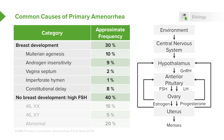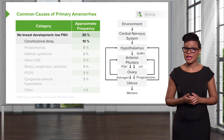If a patient has no breast development, they will likely have a high FSH, or follicle-stimulating hormone. This can happen in normal genetic females such as 46XX, and it can also happen in 46XY individuals.